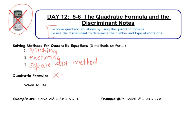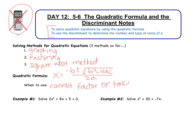The quadratic formula says that x equals the opposite of b plus or minus the square root of b squared minus 4ac all over 2a. You use this when you cannot factor or take a square root, and when you are not allowed to use a calculator. Let's look at a few examples.